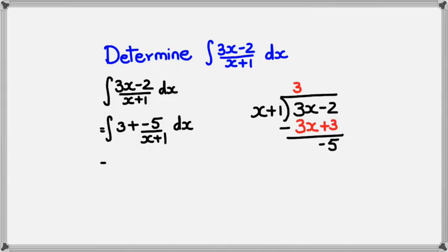Because 3 integrates to 3x, and we have plus, well this part we know that 1 over x will be integrated as ln of x, so in this case it'll be negative 5 ln of x plus 1 plus c.